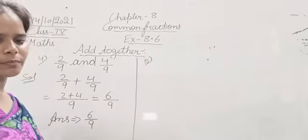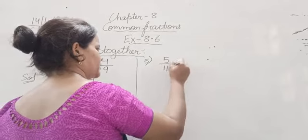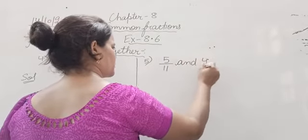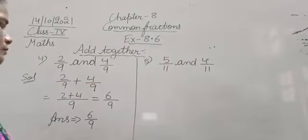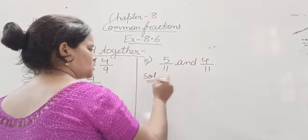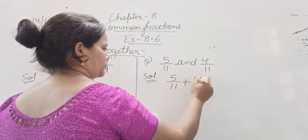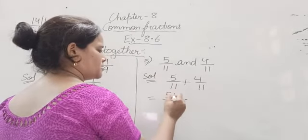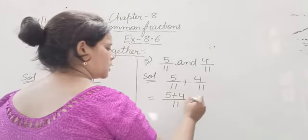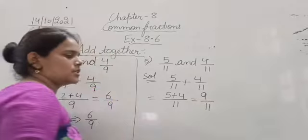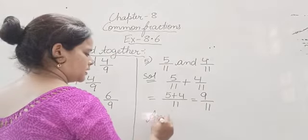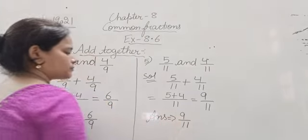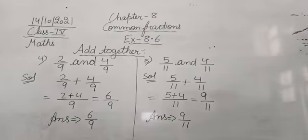Moving to the fifth one. The fifth is 5 upon 11 and 4 upon 11. We have to add 5 upon 11 and 4 upon 11. Again, they are like fractions, so we take the common denominator 11 and add the numerators 5 plus 4, which equals 9. So the answer is 9 upon 11. You can pause it here and note it down in your notebooks.